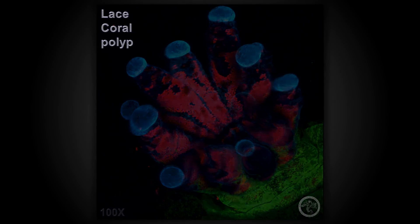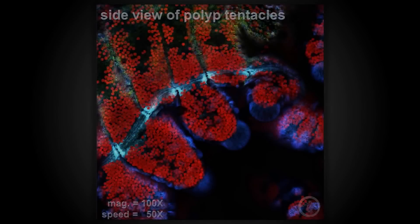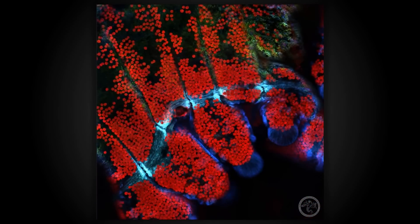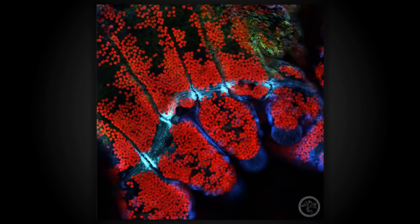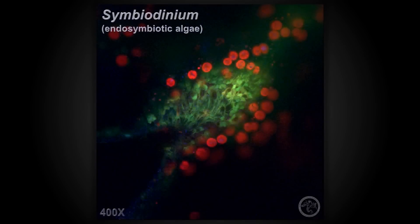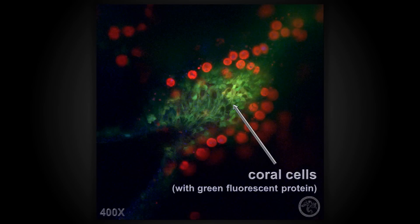Using the confocal microscope also allows us to see inside the coral, such as this view of the lace coral polyp's gastrovascular canal. A side view through this polyp's tentacles shows us the densely packed symbiodinium and bands of tissue that bind the tentacles together. In a close-up view of coral tissue, we can see the arrangement of symbiodinium and the green fluorescence of individual coral cells.